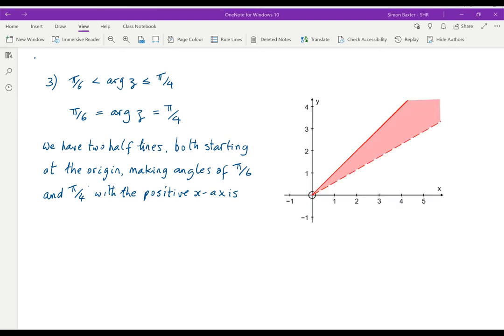So here we have the diagram. The dotted line is arg z is pi by 6, dotted because it's less than. We do not want to be on the line. The solid line is arg z equals pi by 4, solid because we are less than or equal to pi by 4. And shaded in between.